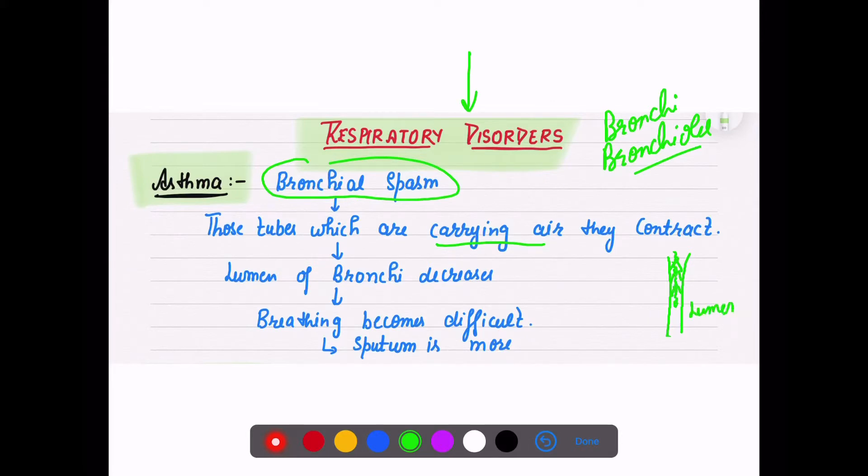With the contraction of bronchi tubes, the inner area called lumen decreases. If the area through which air passes decreases, breathing will become difficult. When breathing becomes difficult due to bronchial spasm, that condition is called asthma.